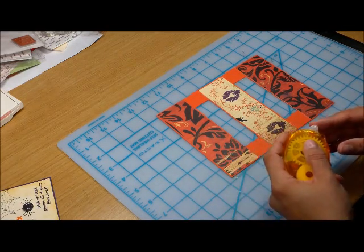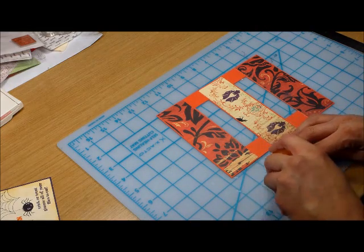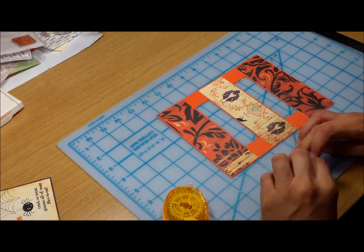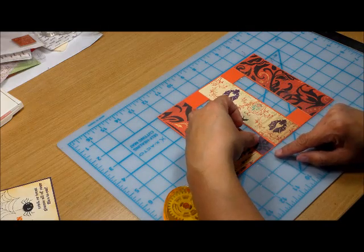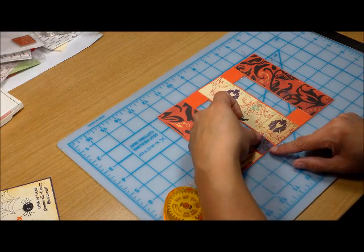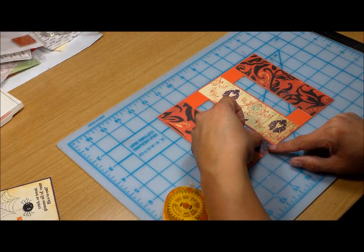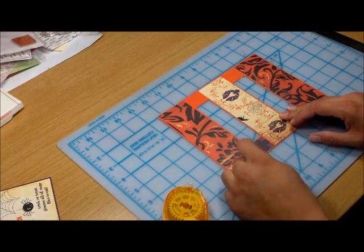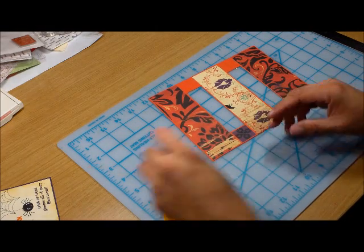If you don't want the border around it, you could certainly just use a 1 inch square punch and just punch out 1 inch squares and pop it in that way too. You just wouldn't have that little orange border around it.